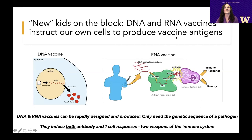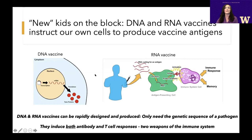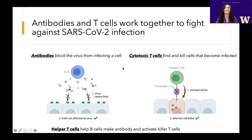Let me return to DNA and RNA vaccines, which is what we're working on. They instruct your own cells to produce vaccine antigens. DNA vaccines must get delivered into the nucleus, where they make messenger RNA, which then makes proteins. RNA vaccines don't need to get into the nucleus — they just need to get into the cytoplasm to induce immune responses. Both DNA and RNA vaccines are very effective at inducing both antibody and T cell responses, and can both be rapidly designed and produced using only the genetic sequence of the pathogen.